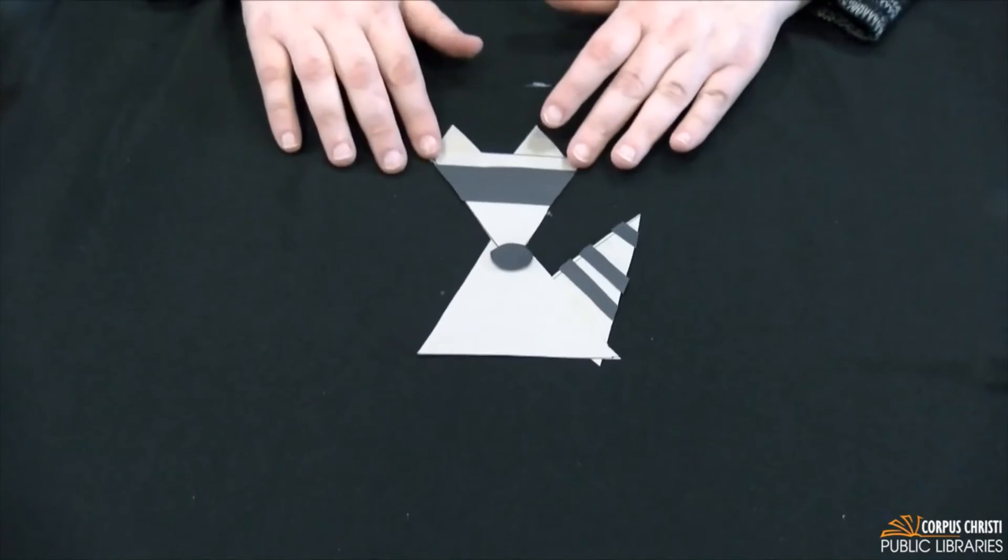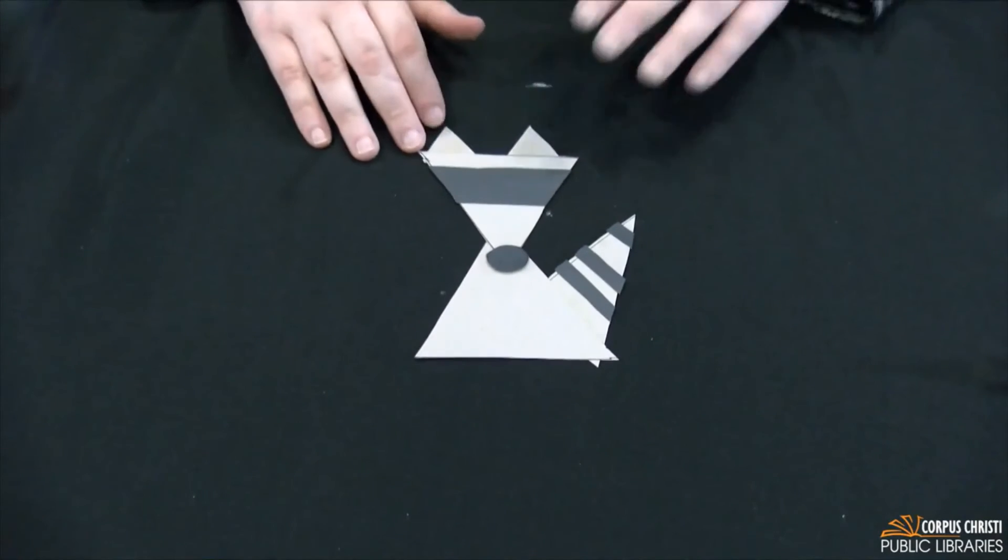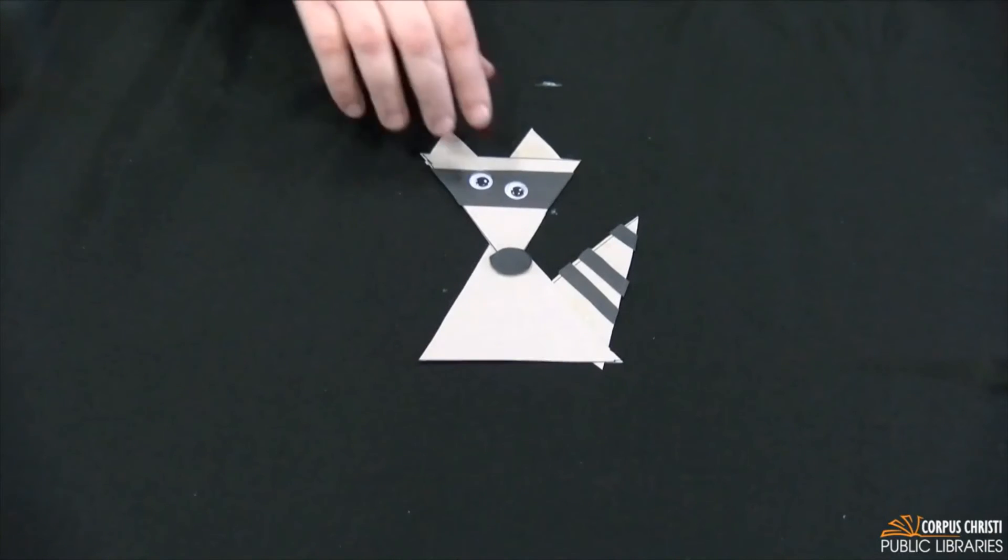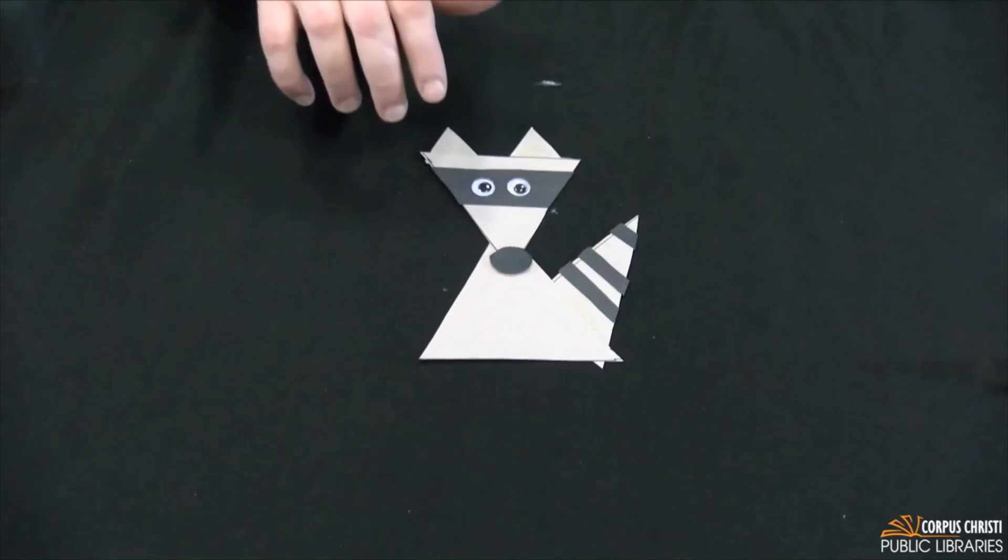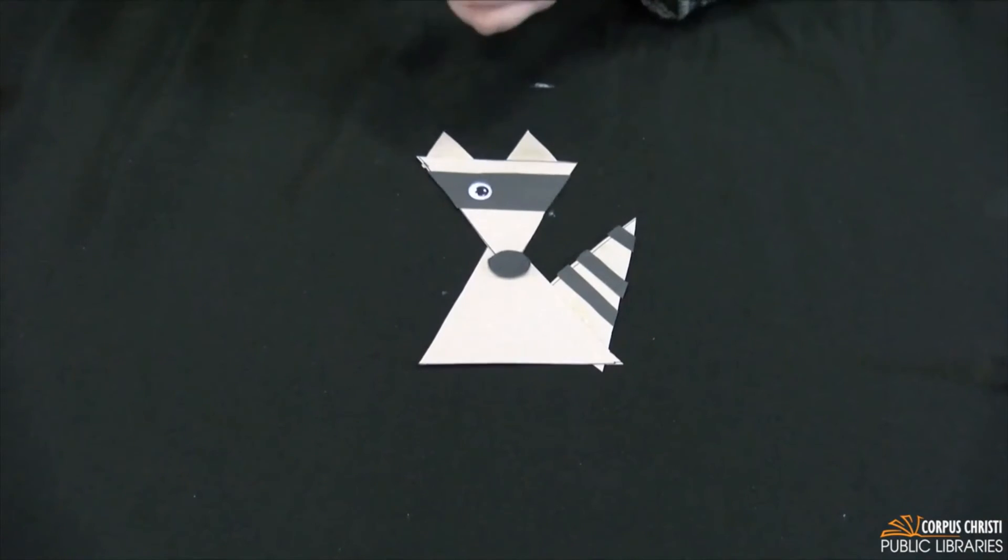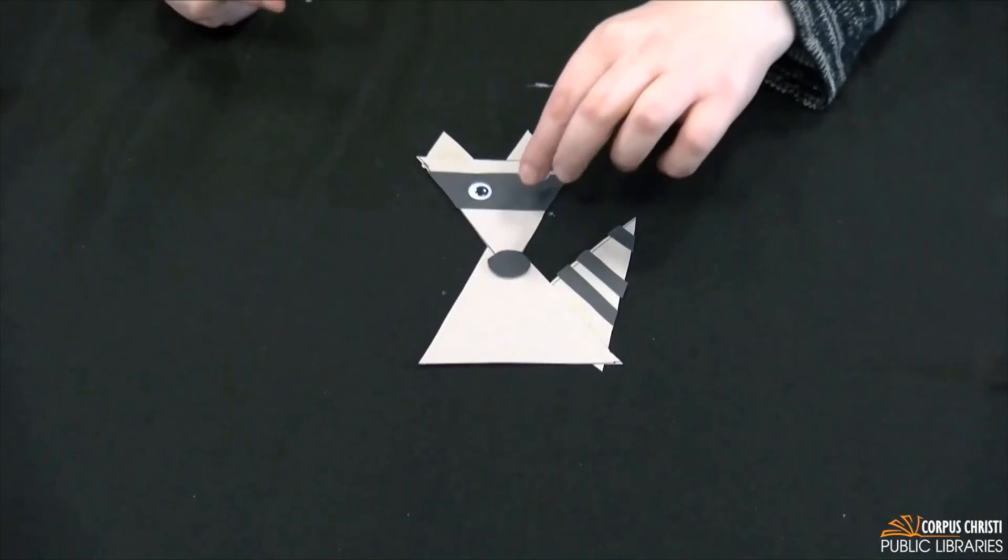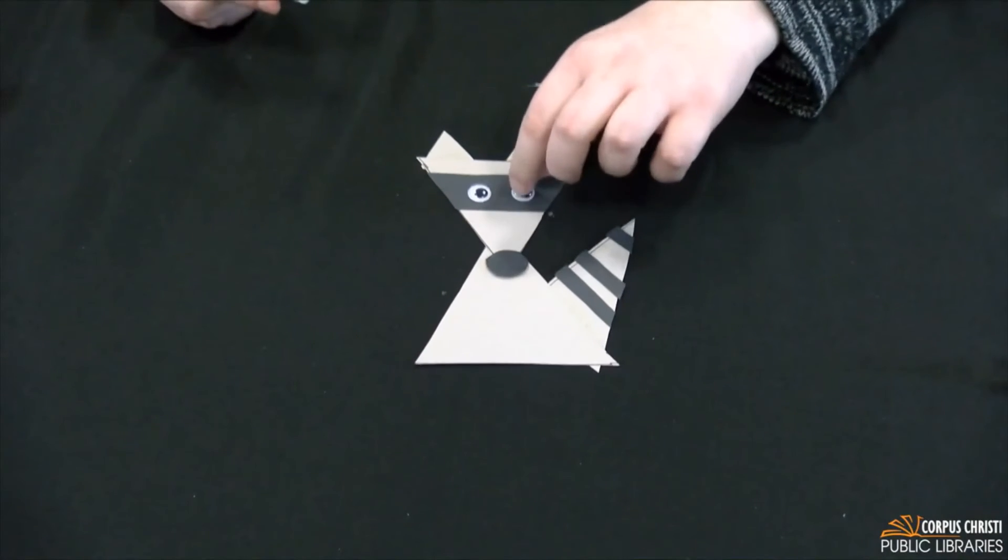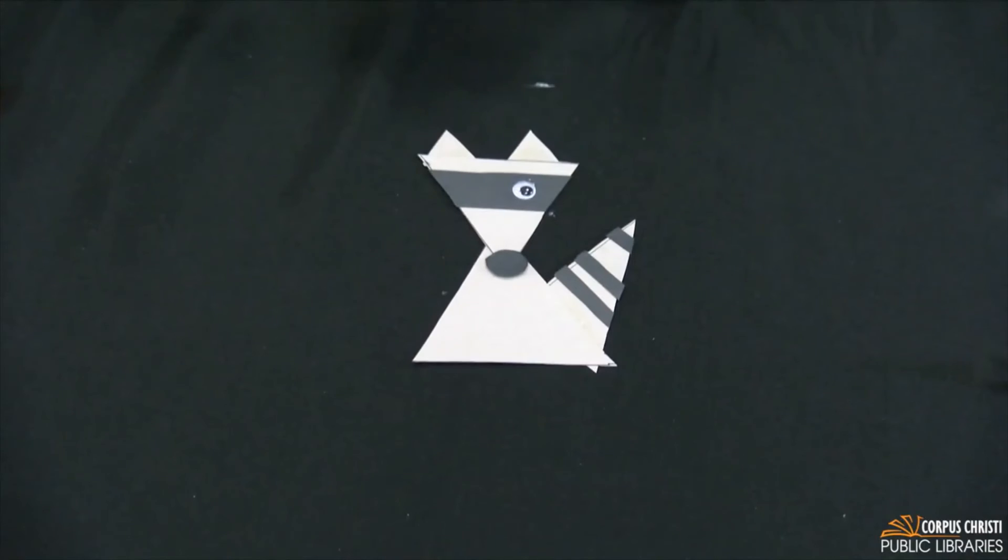And the only thing left for me to do is add my eyes. Now I have these eyes but if you don't happen to have any at your house you can always use white paper and draw on it with a black marker.